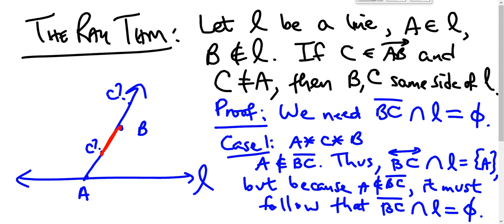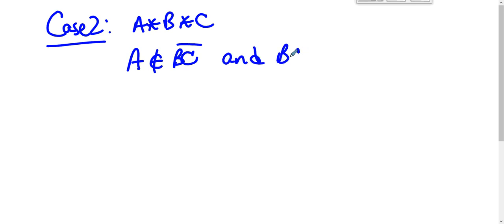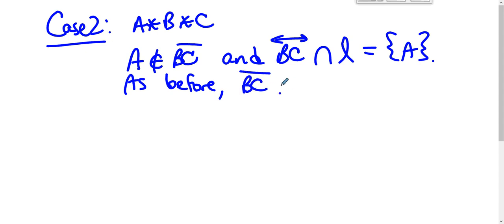In the second case, the second case has B between A and C. We know that A is not on segment BC for the same reason, and line BC intersect L is the point A. It is a quite analogous argument, it's the same argument.